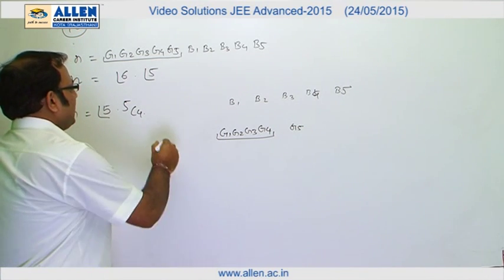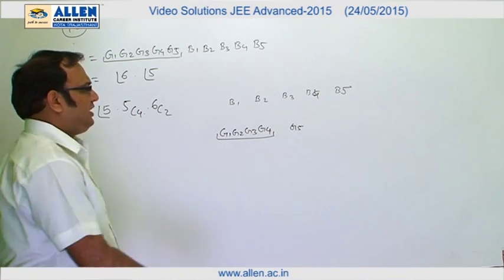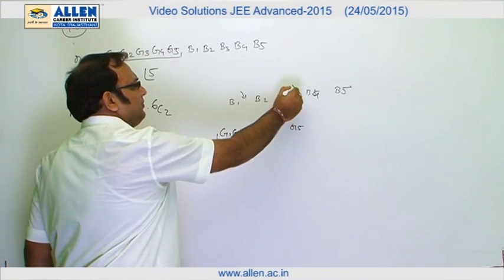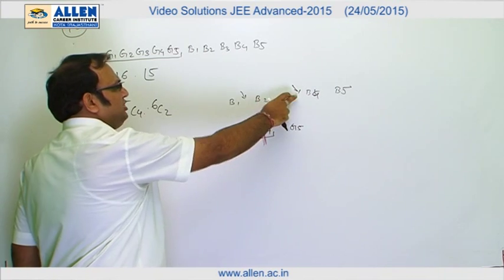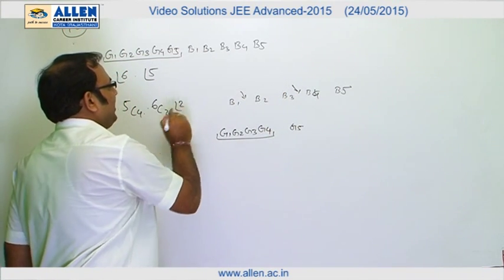So out of these 6 gaps, first I will choose 2 gaps. Let's say I have chosen this gap and this gap. Now having chosen these gaps, I will put these 2 objects in these gaps in 2 factorial ways.